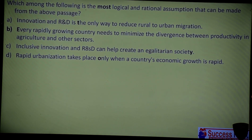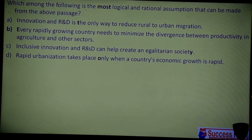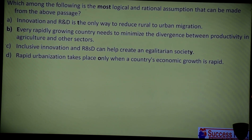Now looking at the MCQ options: Option 1 — Innovation and R&D is the only way to reduce rural-to-urban migration. I explained this separately, but the passage does not say this — migration is not mentioned in the passage. So Option 1 is wrong.